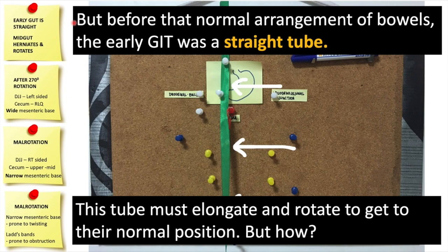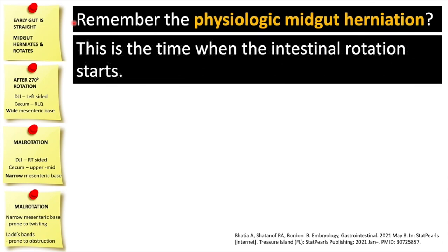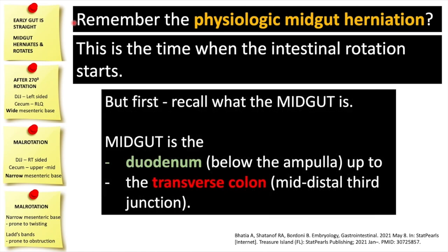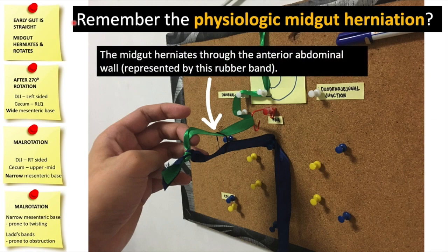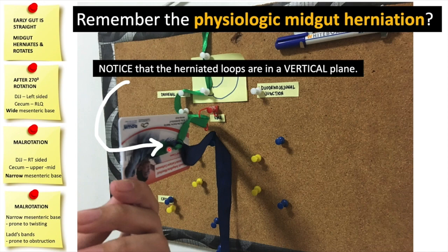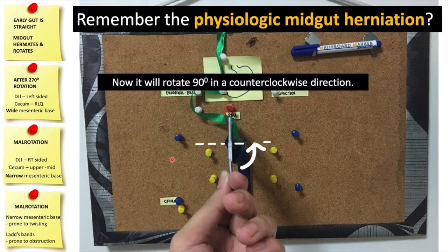But how? Remember physiologic midgut rotation — this is the time when intestinal rotation would start. The midgut is the duodenum below the ampulla up to the transverse colon. The midgut herniates to the anterior abdominal wall, represented here by this rubber band. Notice that the herniated bowel loops are in a vertical plane, one loop on top of the other. Here it is in the frontal view when we are facing the embryo.